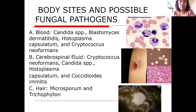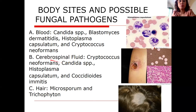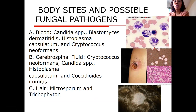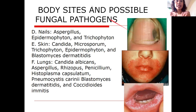In hair: Microsporum, Trichophyton, Malassezia, and Candida — what you think is just a hair problem might actually be a fungal infection. Cryptococcus has a halo-shaped capsule appearance. Histoplasma capsulatum can be seen inside macrophages. In nails: Aspergillus, Epidermophyton, and Trichophyton — these can be challenging because sometimes multiple species are involved. In skin: Candida, Microsporum, Trichophyton, Epidermophyton, and Blastomyces dermatitidis. In lungs: Candida albicans, Aspergillus, Rhizopus, Penicillium, Histoplasma capsulatum, Pneumocystis carinii (now Pneumocystis jirovecii), Blastomyces dermatitidis, and Coccidioides immitis.